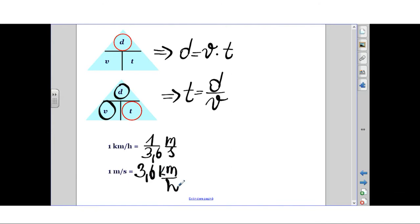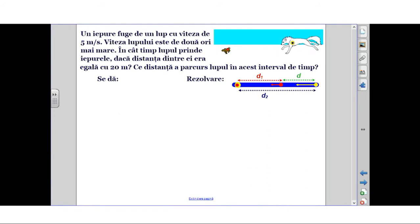Now we will analyze some situations. The first problem: a rabbit runs with velocity 5 m/s. The wolf's velocity is twice that of the rabbit. How long does it take for the wolf to catch the rabbit if the distance between them was initially 20 m? What distance does the wolf travel in this time interval?